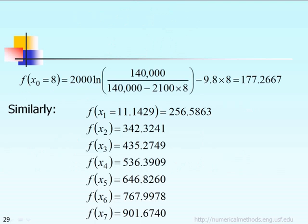Once we know the values of x0, x1, x2, all the way to x7, we can also calculate the function at x0, x1, x2, all the way to x7. For example, to calculate the function at x0 equal to 8, you look at the given function and wherever you see x, you replace it with 8. That's the way to calculate the function value.